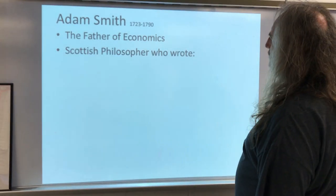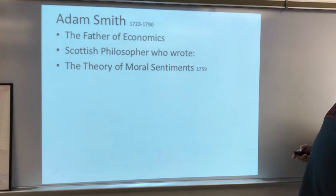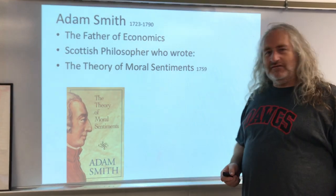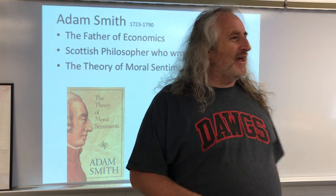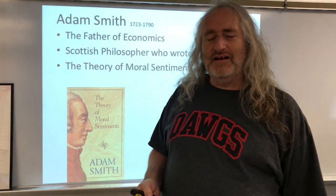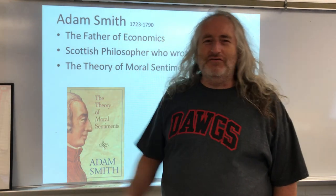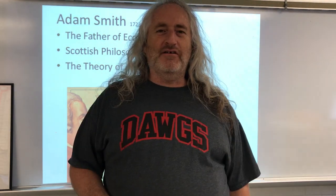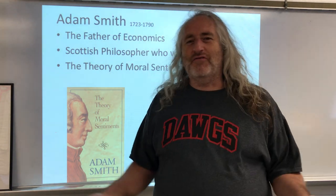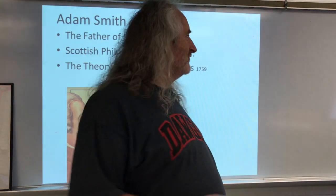He was a Scottish philosopher who wrote a couple of books. Number one was something called the Theory of Moral Sentiments in 1759. In this book, Adam Smith was more of a philosopher than anything else. He was looking at human beings and why we do the things we do, and he was really trying to understand morality — why are people ethical, why do people do the right thing and why do people not do the right thing.